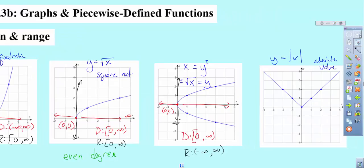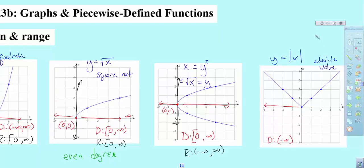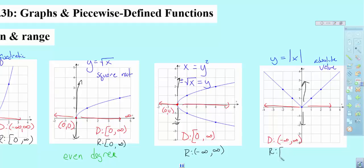Last but not least, the absolute value function. Looking at domain: I look off to the left — I go to negative infinity. I look off to the right — I go to positive infinity. For the range: I look down and don't see anything. I look up and I do see stuff, so I start at zero and go to infinity. So that covers the basic functions, their shapes, and their domain and range.